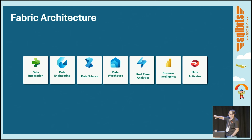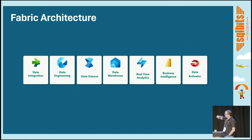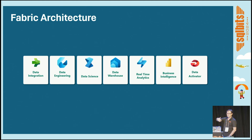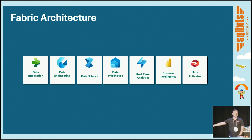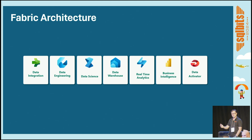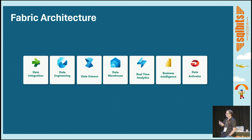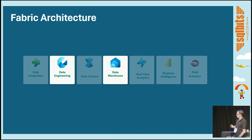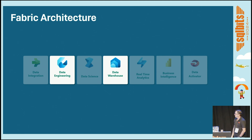This looks at the seven workloads that Fabric has. Each one of these workloads does something different — some deal with ingesting data, some with transforming it, and others with presentation. The ones we're going to be looking at are the data engineering one and the data warehousing one.